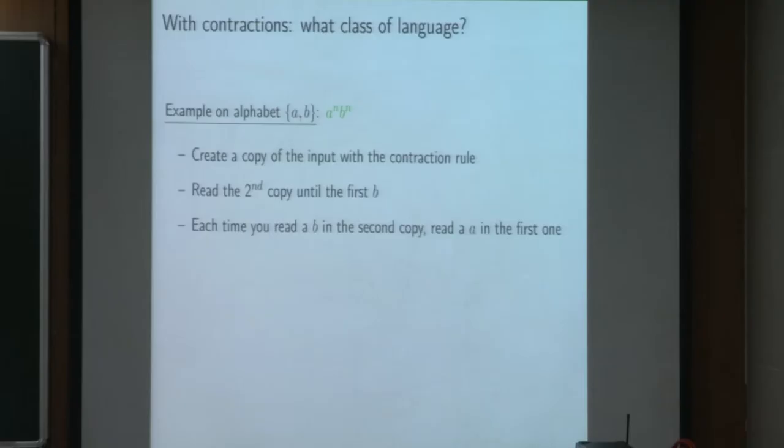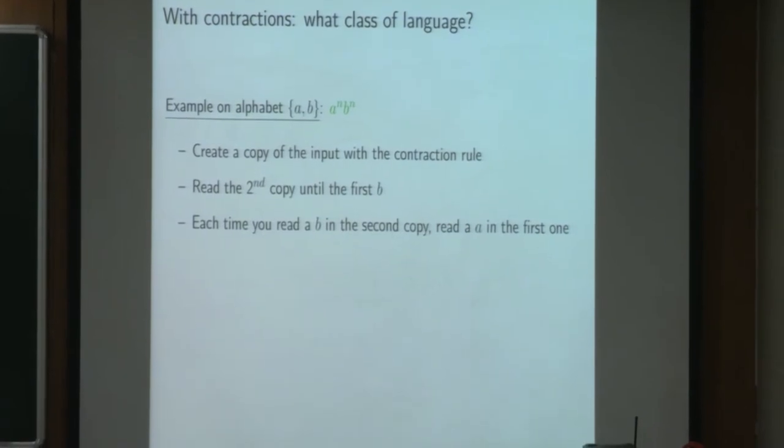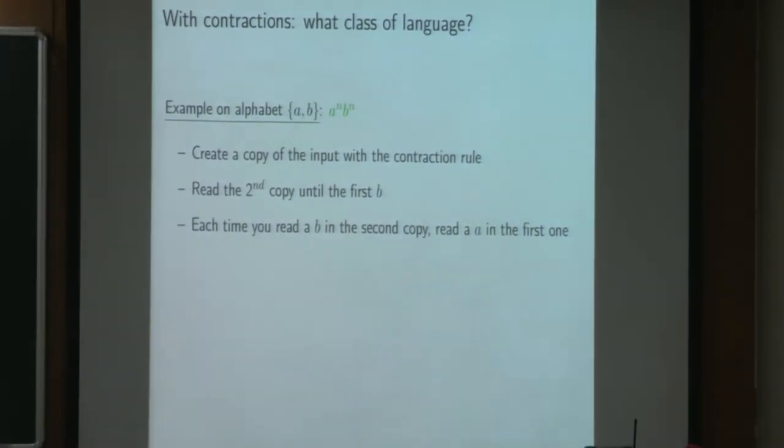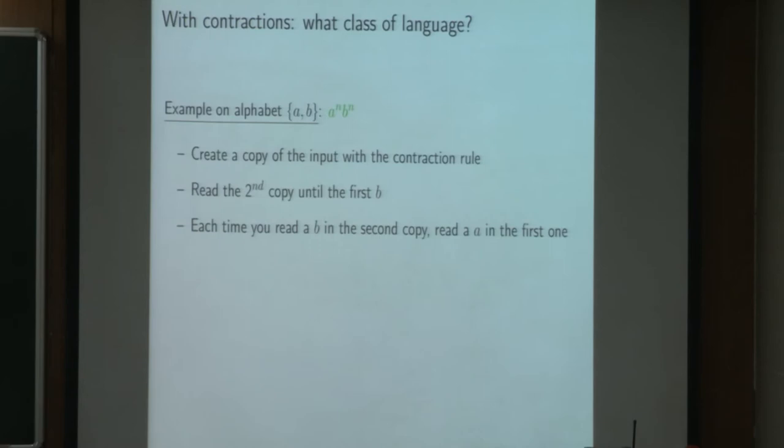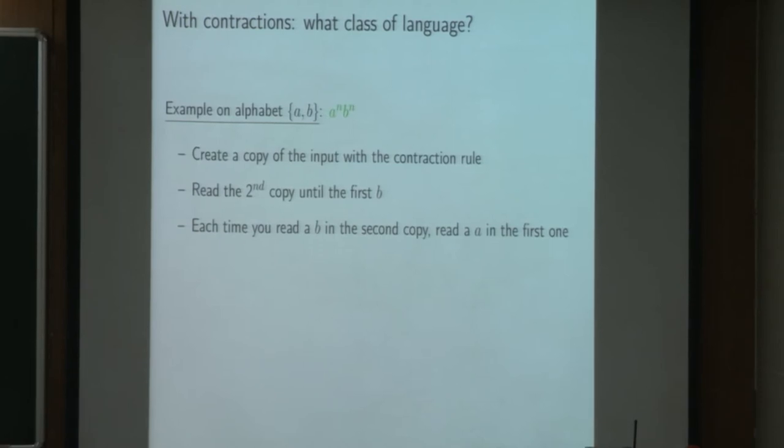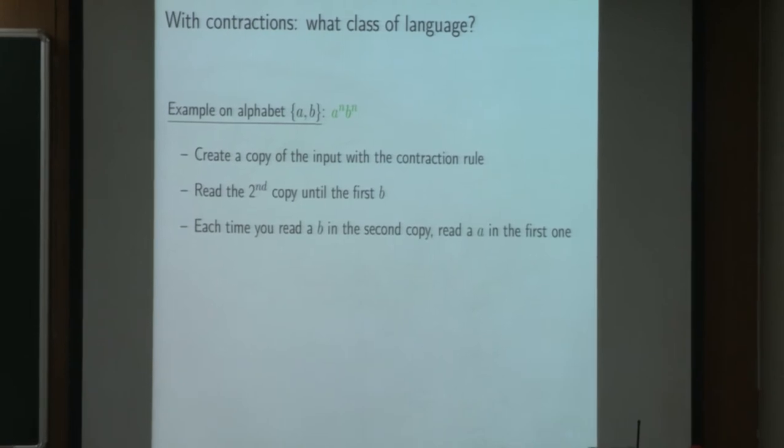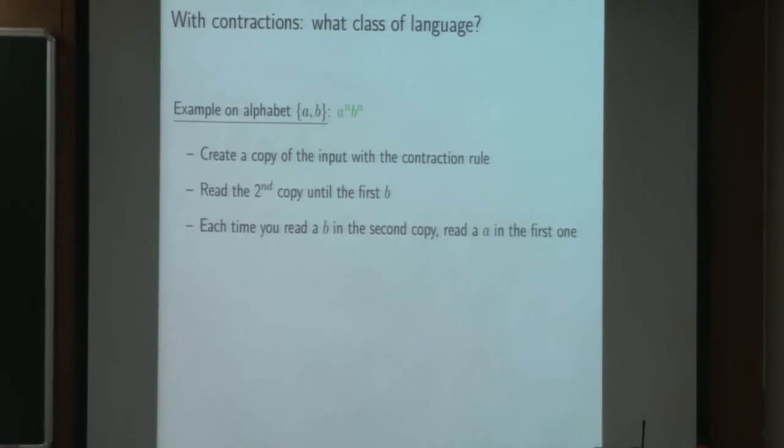But when we add the contraction rules to the system, we add a lot of expressivity to it. And for example, we can do the language A^n B^n, which is well known not to be regular. How we do this? First, we use the contraction rules to create a copy of the input word. And on the first word, we will read the A, and on the second one, we will read the B. So we just read the second copy until the first B. And then we begin to read both copies synchronously. Each time we read A in the first one, we want to read a B in the second one until the end.